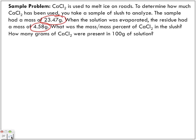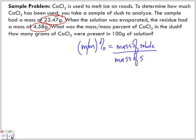We start off with our equation: mass/mass percent equals the mass of solute in grams divided by the mass of solution, times 100. What information are we given? The mass of the solute is the residue left behind, 4.58 grams. The mass of the solution is 23.47 grams.